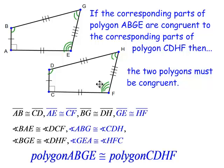Let's see what it says on this page. If the corresponding parts of angle ABGE are congruent to the corresponding parts of polygon CDHF, then the two polygons must be congruent. So if we're saying all these corresponding parts are congruent to all of those, then these two figures must be congruent.